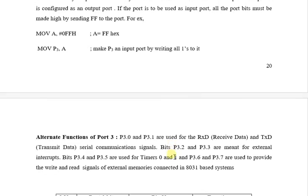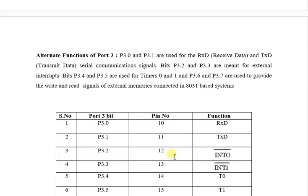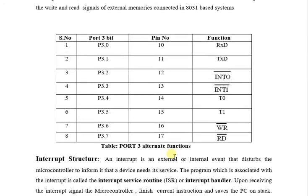These control functions are as follows. The first bit is used as RxD and the second bit is used as TxD. These 2 bits are used for serial communication.